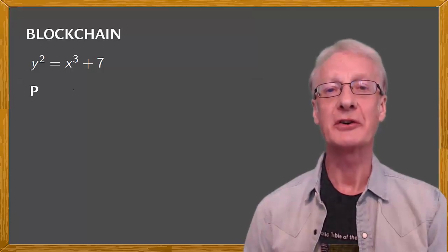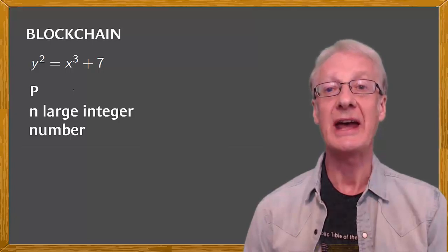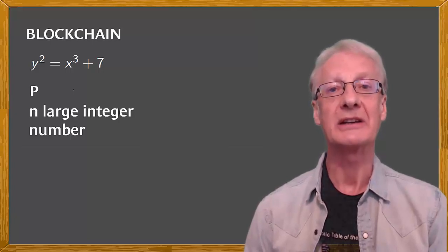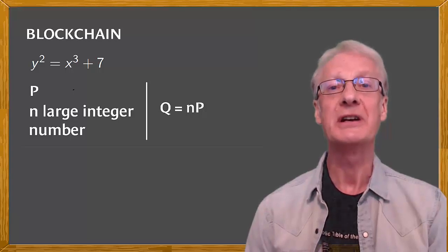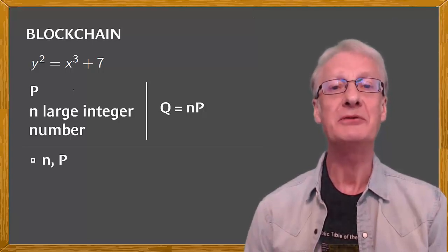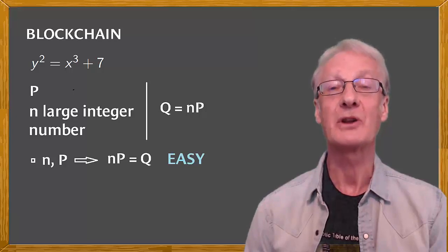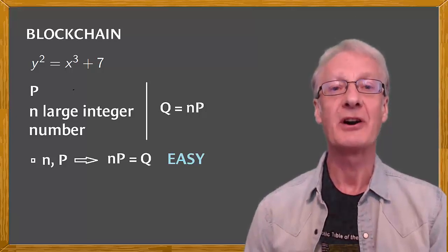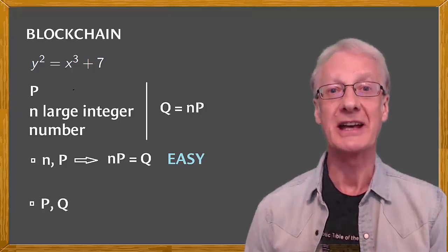Take a point P on the curve, then consider a large positive integer n, and calculate Q equal to nP. In other words, P added to itself n times. Knowing n and P, a computer can carry out this calculation very efficiently. On the other hand, starting from P and Q, it's very difficult to calculate n.